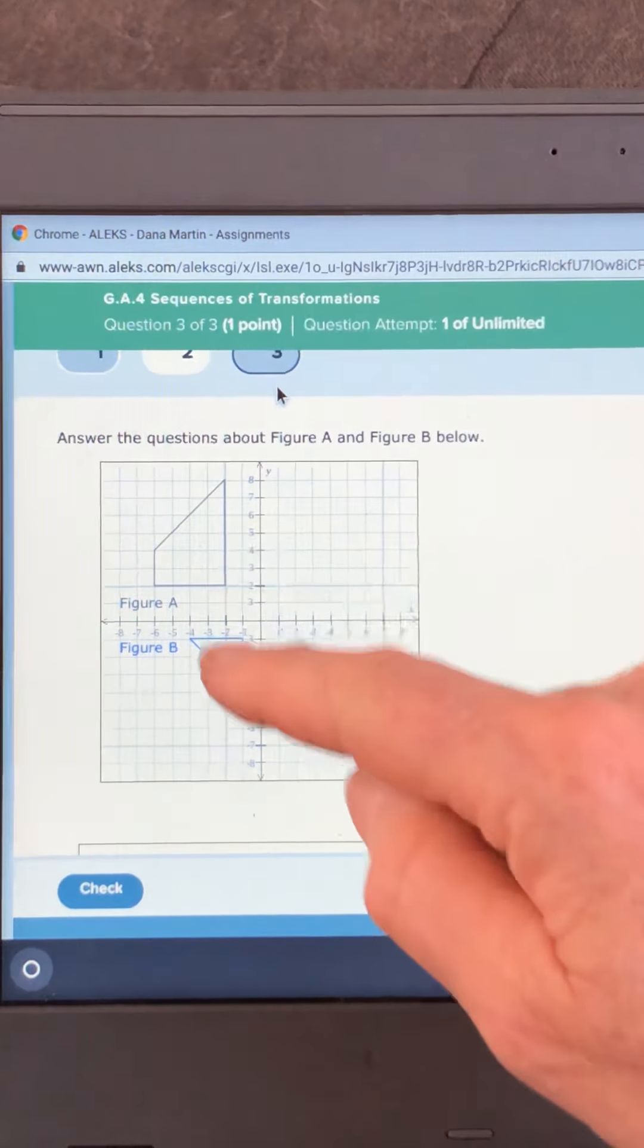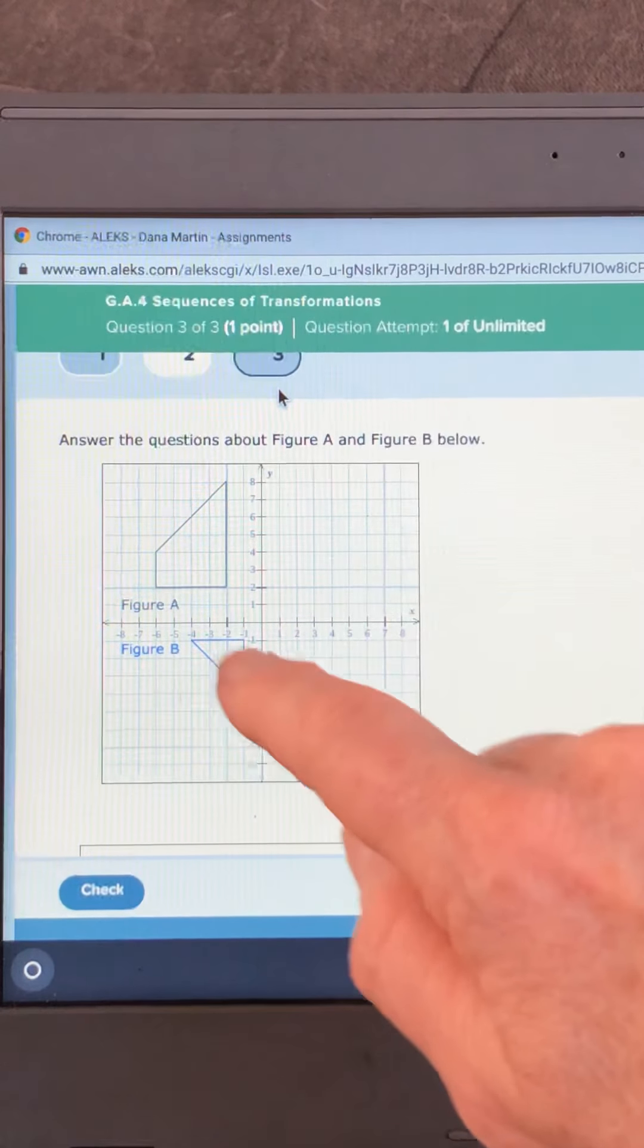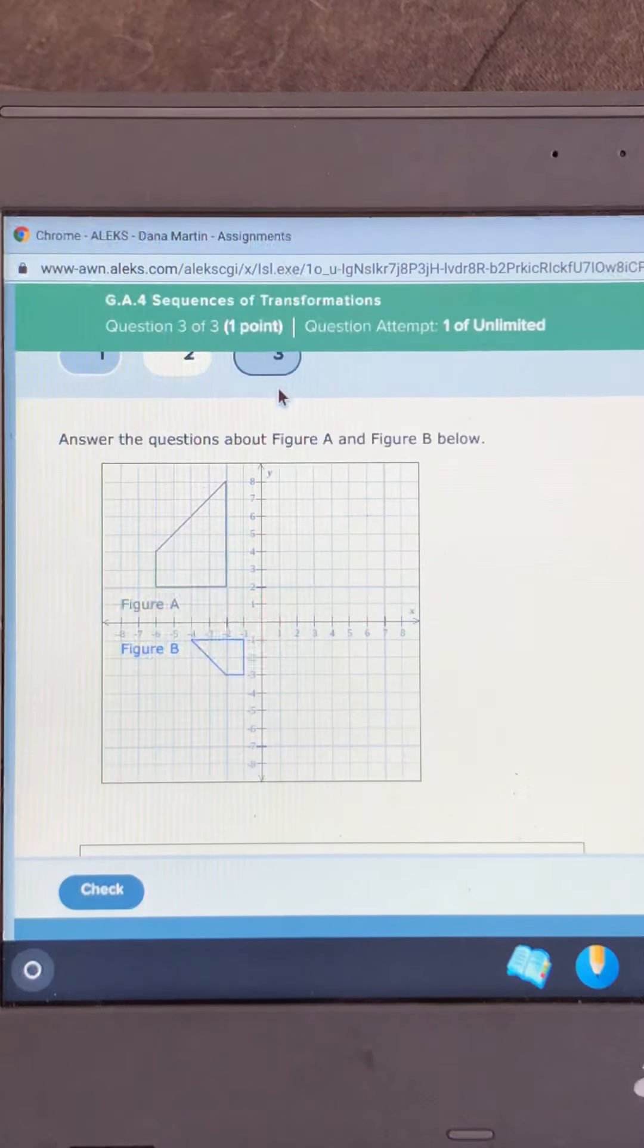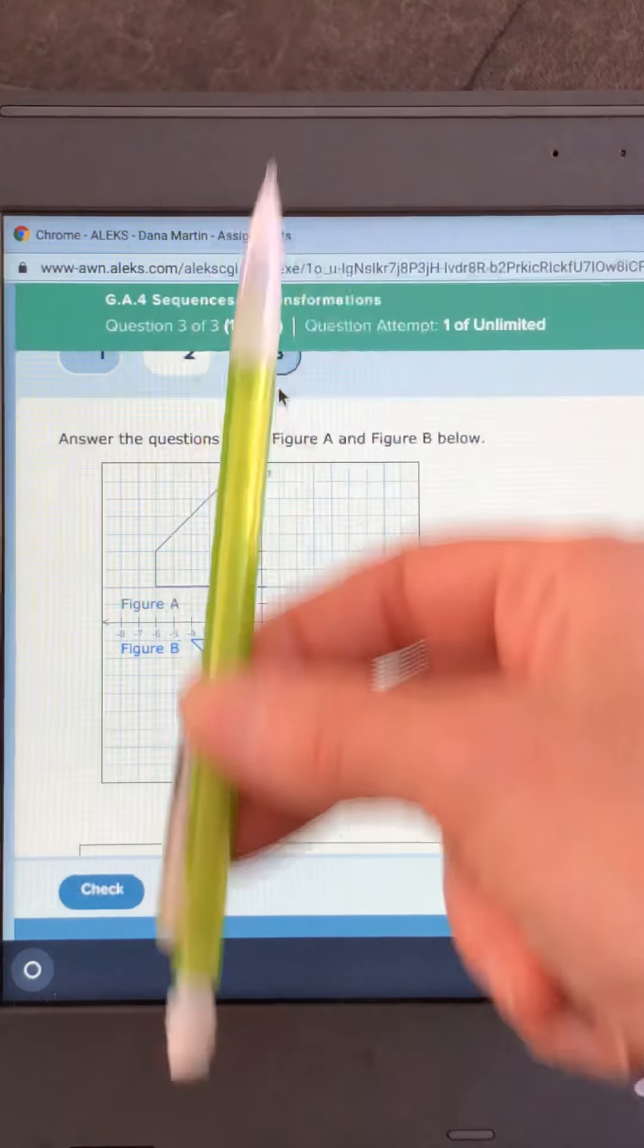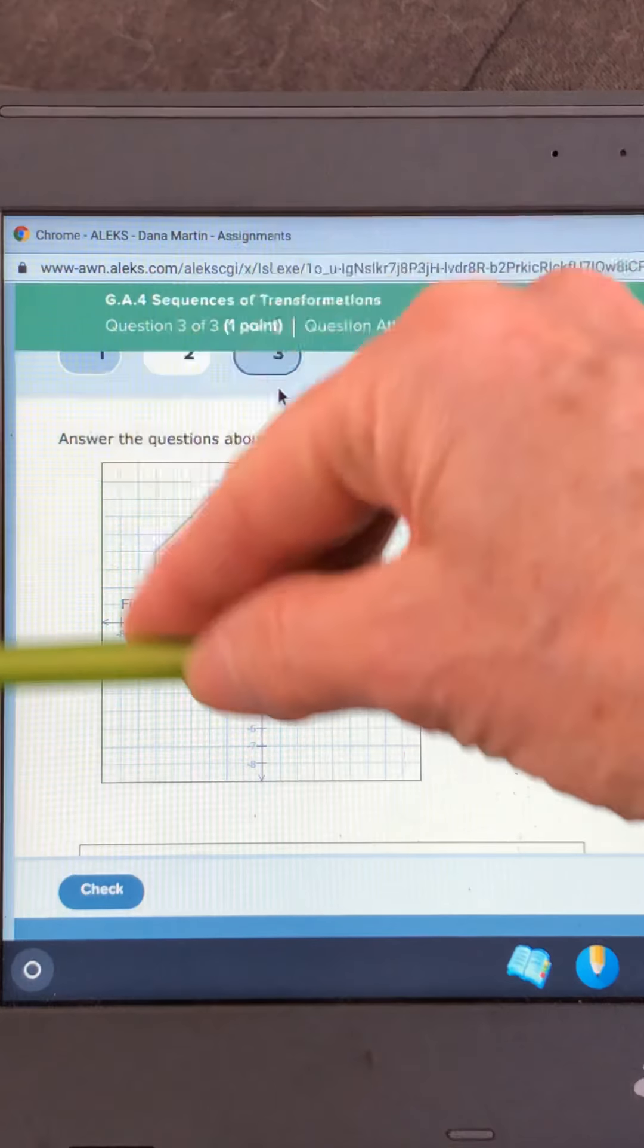So you can tell there's a dilation. Here's our original figure A. B will be the final. So the original, we definitely have dilated it. Can you tell if it's here and it goes right there, then you can't translate it. You can't flip it. What we have to do is rotate it.